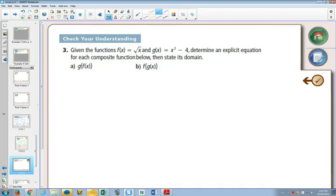So now we've got another one, same kind of idea. Find the explicit equation, then state the domain. The reason this one's here is because we have a square root involved.